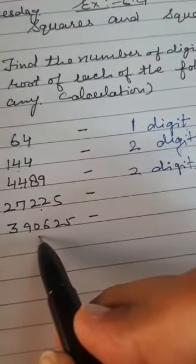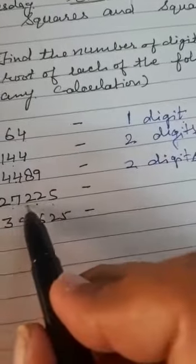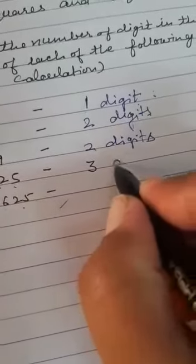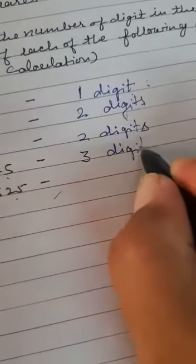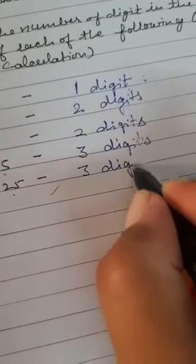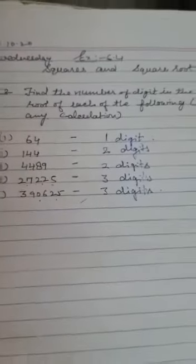There are 5 digits here and 6 digits there, so the square root will have 3 digits. Okay, so you just do this question number 1.